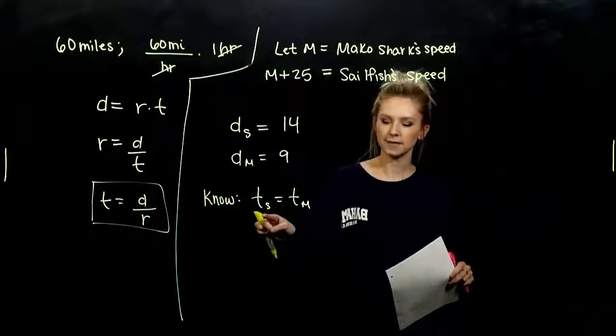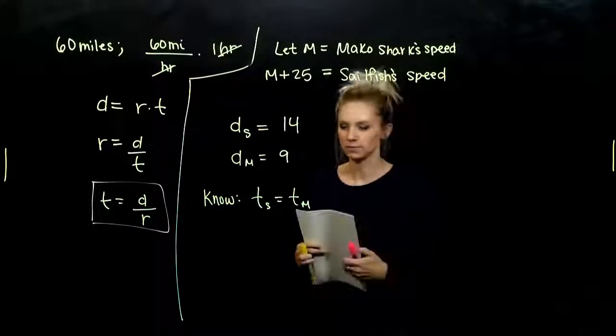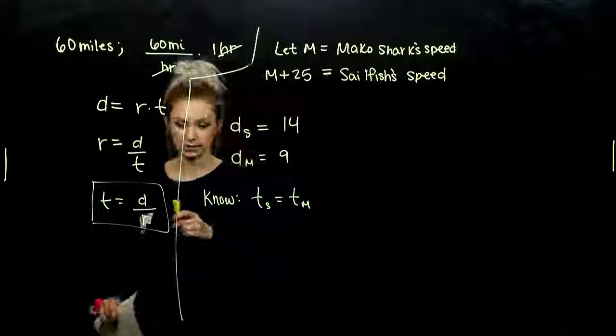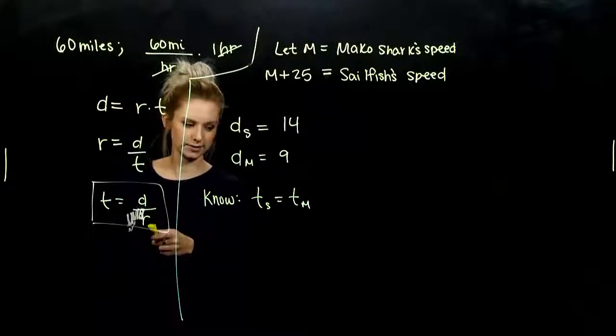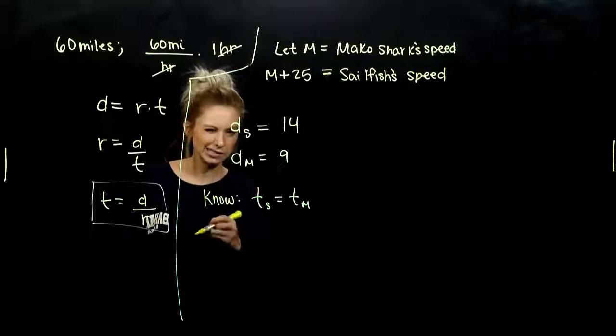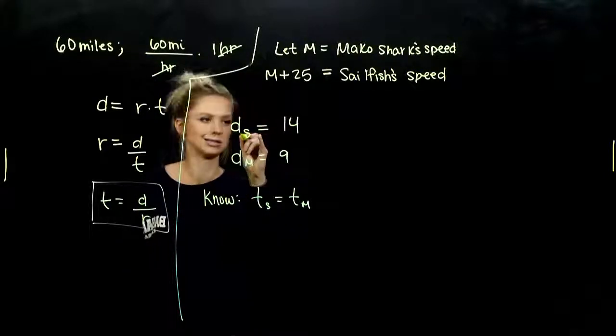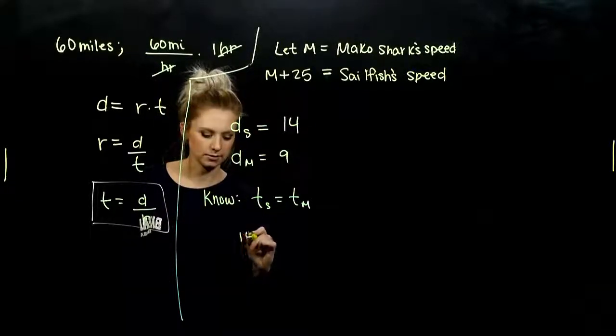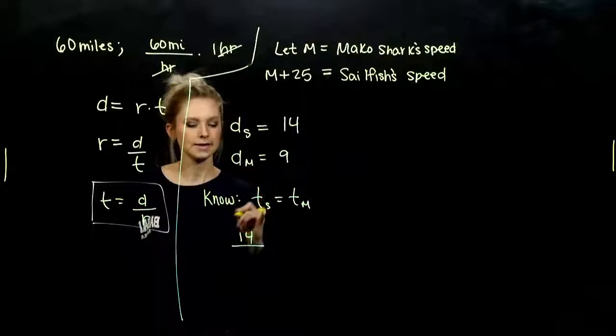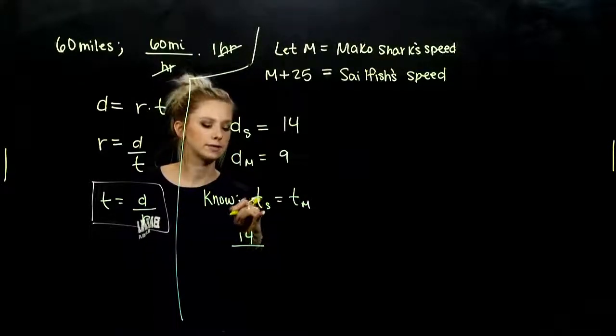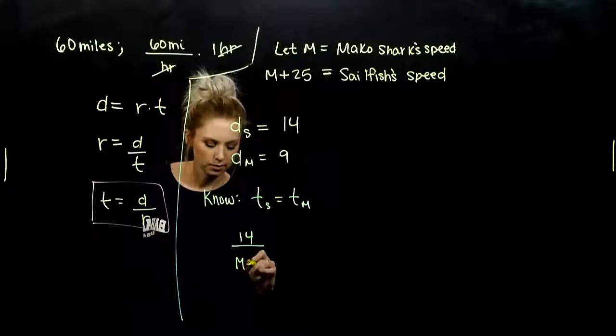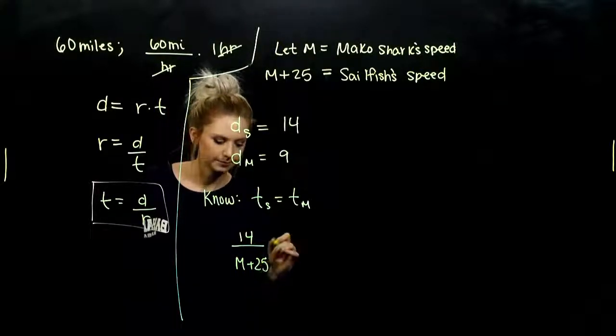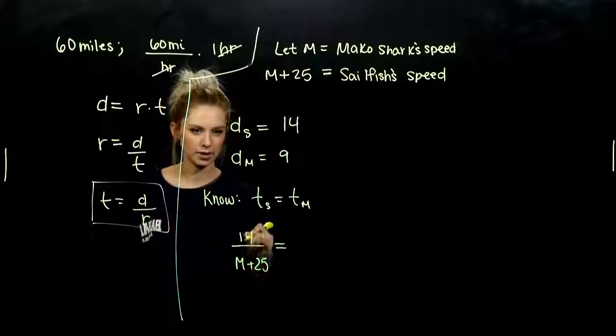So let's start to fill in these pieces of information. How can I represent the time of the sailfish? It's going to be the distance of the sailfish divided by the rate of the sailfish. So what is the sailfish's distance? 14 miles is how far he's traveled. And his rate, how fast is the sailfish traveling? M plus 25.